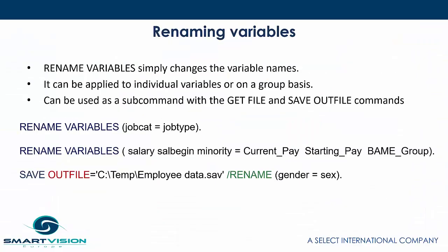The next example is renaming variables. Renaming variables simply changes the variable names. It can be applied to individual variables or on a group basis, and it can be used as part of a subcommand — slash rename — which you can apply when loading a data file with get file or when saving with the save outfile command. Here we have renaming job cap to job type, and renaming a group: salary, salbegin, and minority become current pay, starting pay, and BAME group. Here's an example of renaming gender to sex while saving the data set.